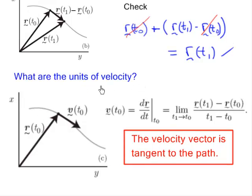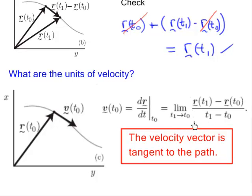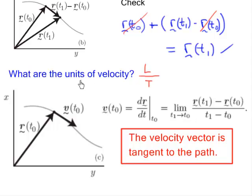Before we end this video, one last question: what are the units of velocity? It's very important that we know units. To answer this, just look at the definition of velocity. In the definition there's a numerator and a denominator. The numerator has a difference in position — we've already said position has units of length, so the numerator has units of length. The denominator has a difference in times, so the denominator has units of time.